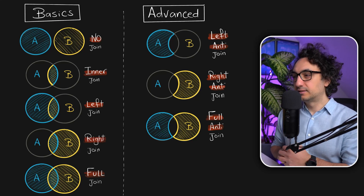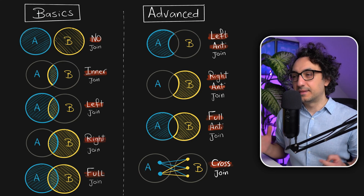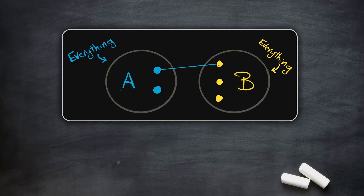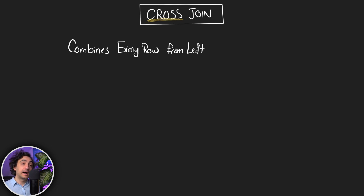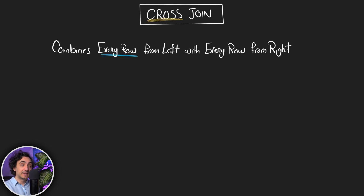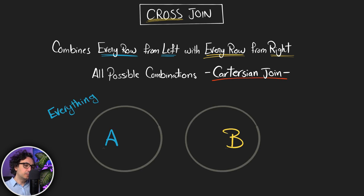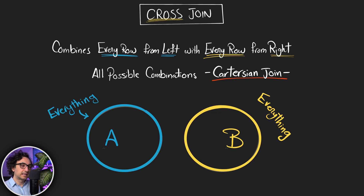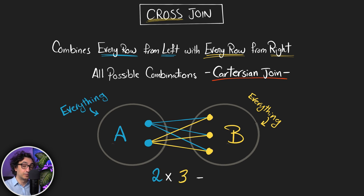Now we can speak about one crazy join: the cross join, which is totally different from all other types. In some scenarios we want to combine every row from the left with every row from the right — all possible combinations from both tables, a Cartesian join. If you have two rows in A and three rows in B, a cross join gives six possible combinations by multiplying the number of rows. Be careful: using the cross join can produce a crazy number of rows and make the database very busy.